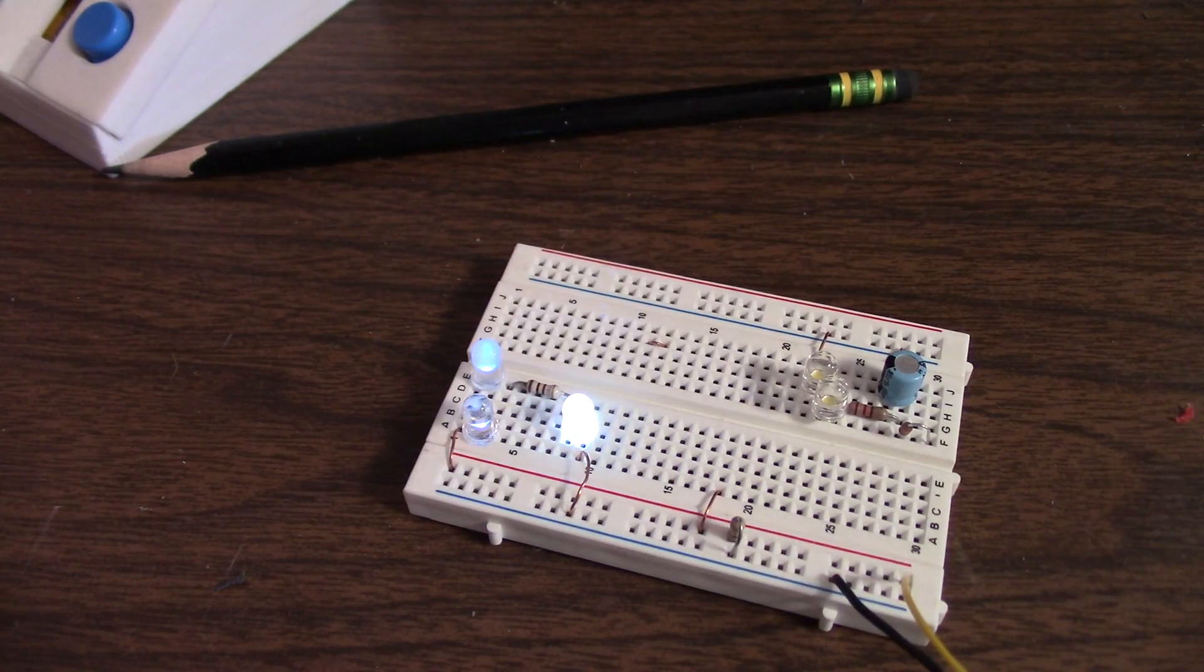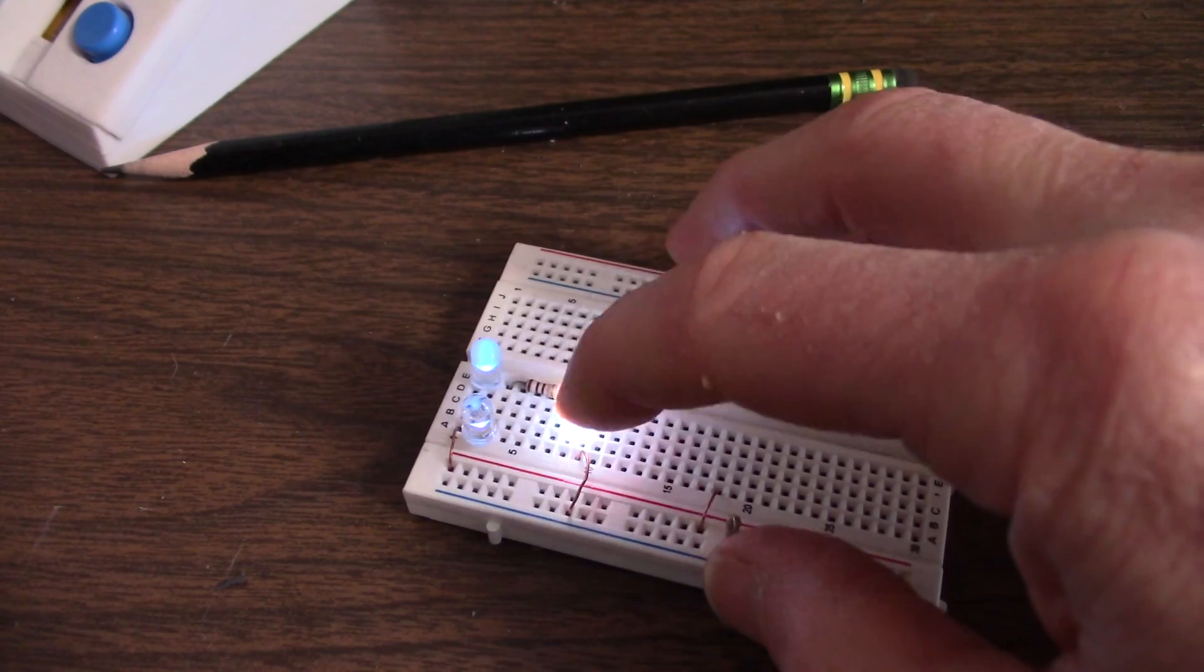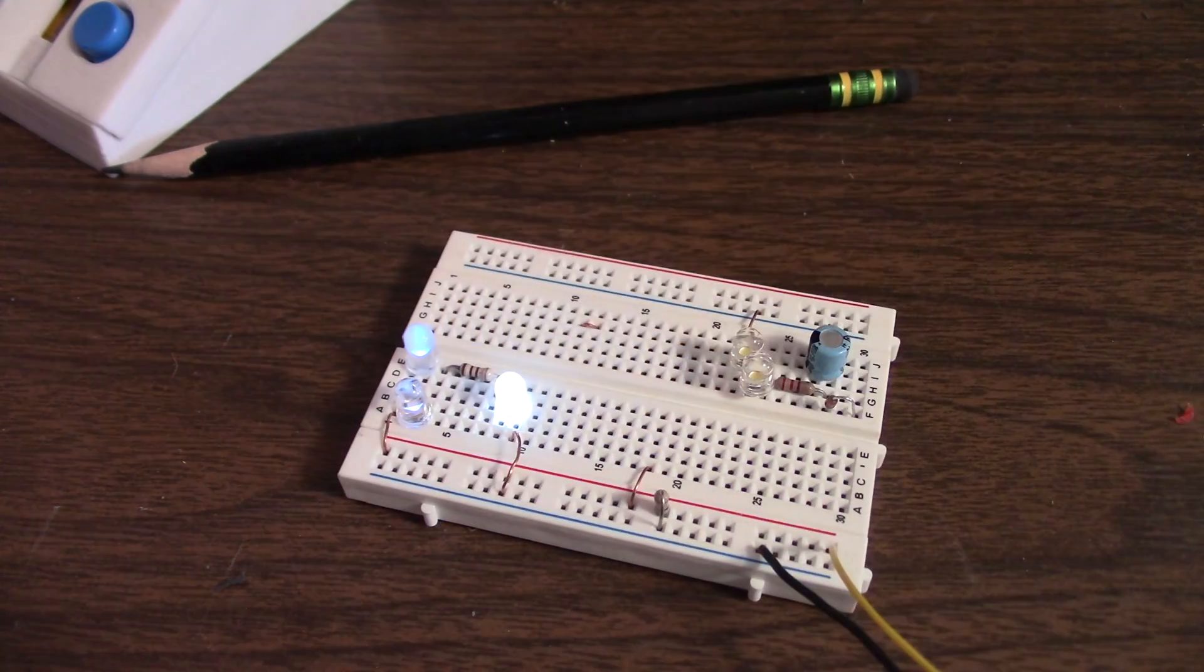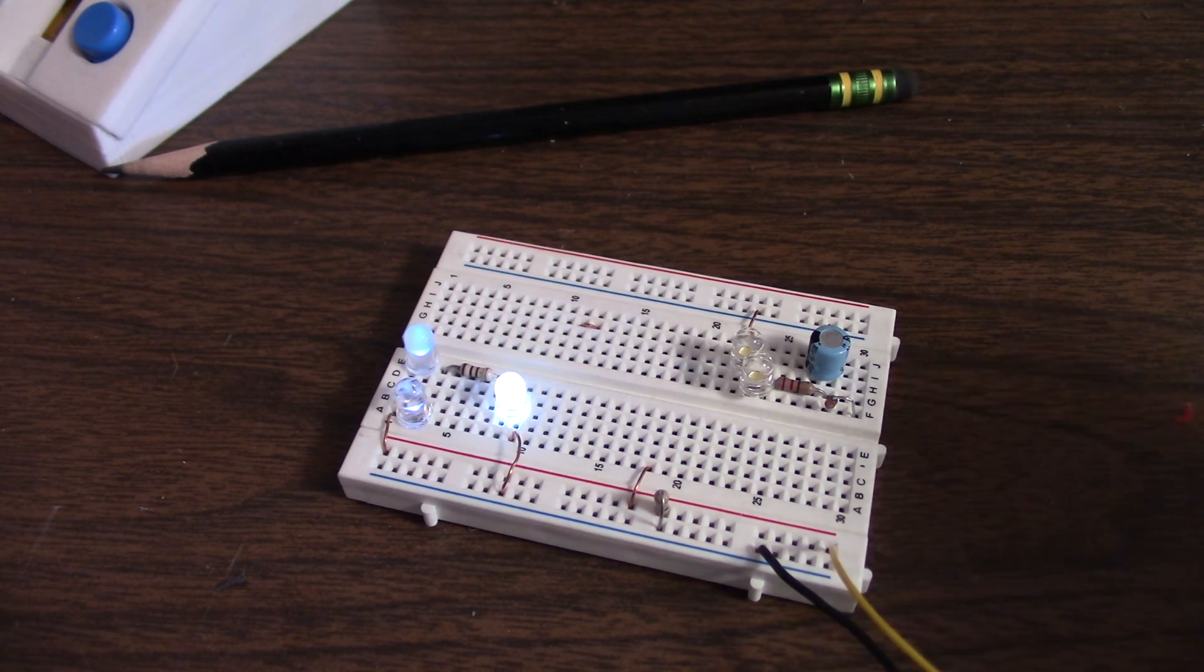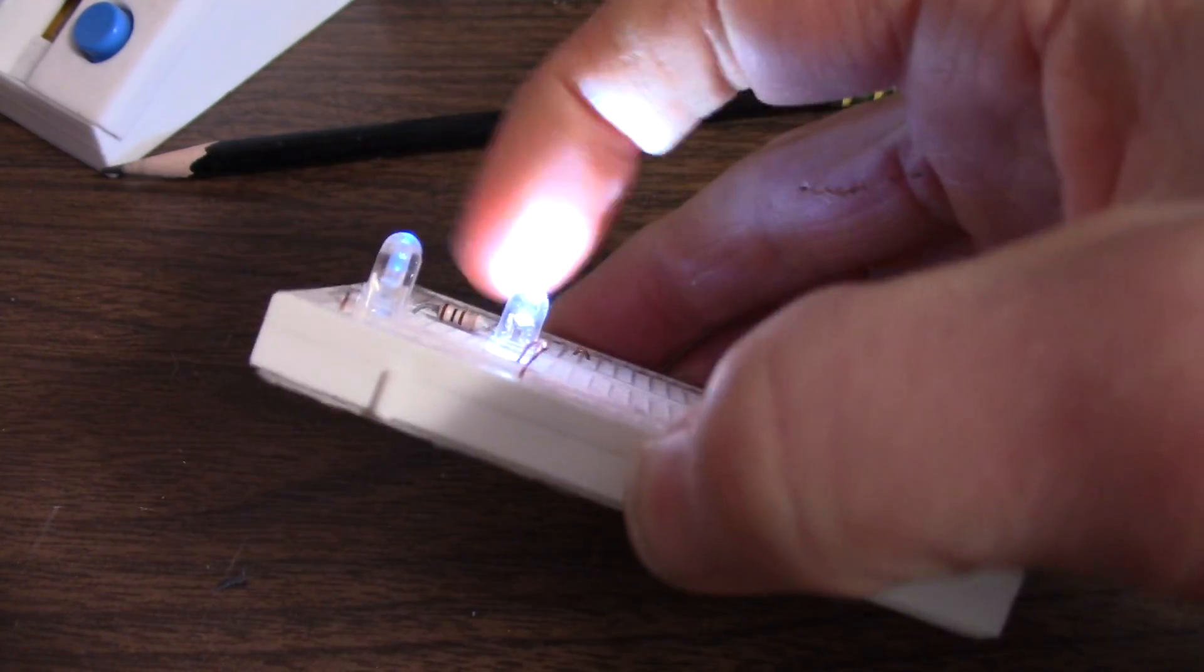That LED was made by Nichia. If you watched that video I mentioned earlier, you'll know what I'm talking about. I got this in early 1997. And I believe the first white LEDs came out in 96. So that might be from one of the first batches.